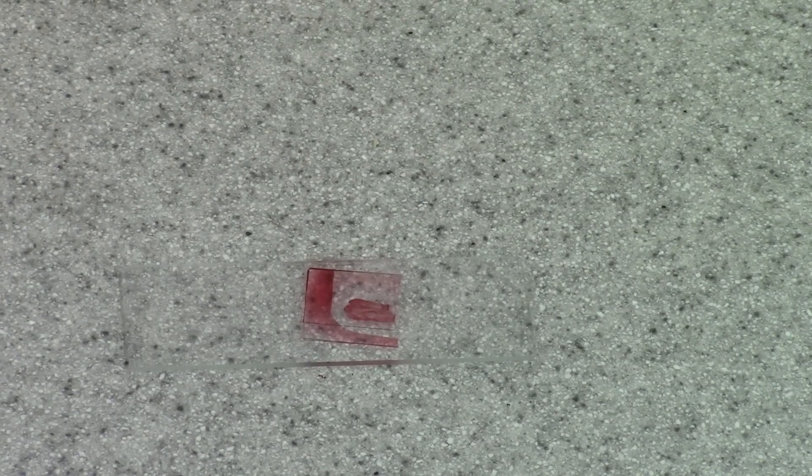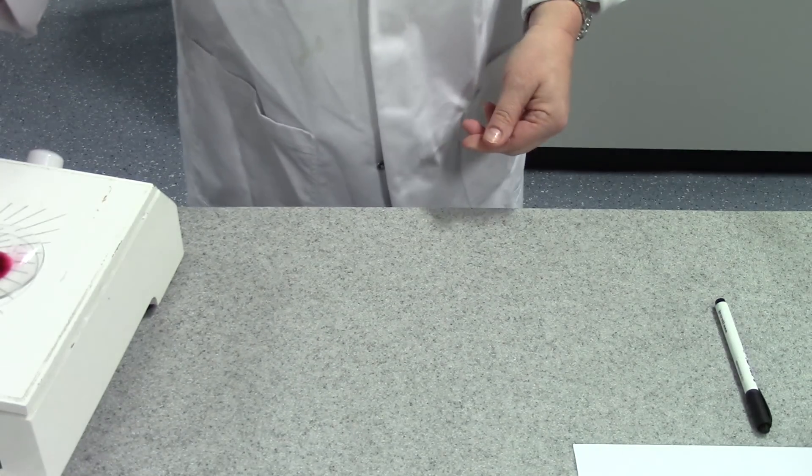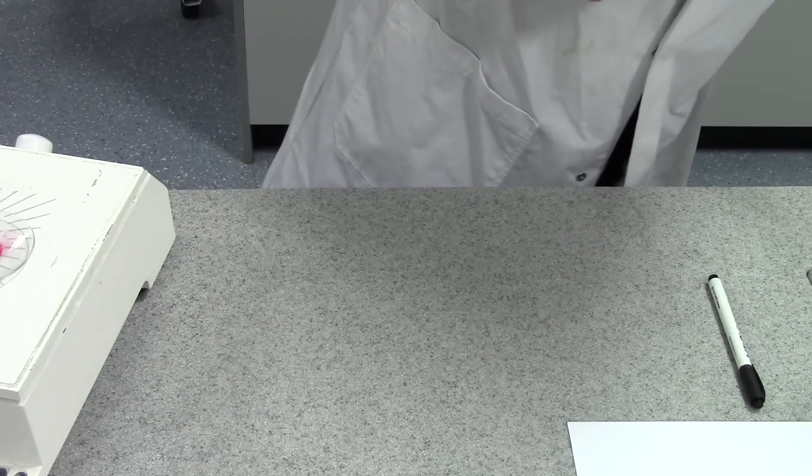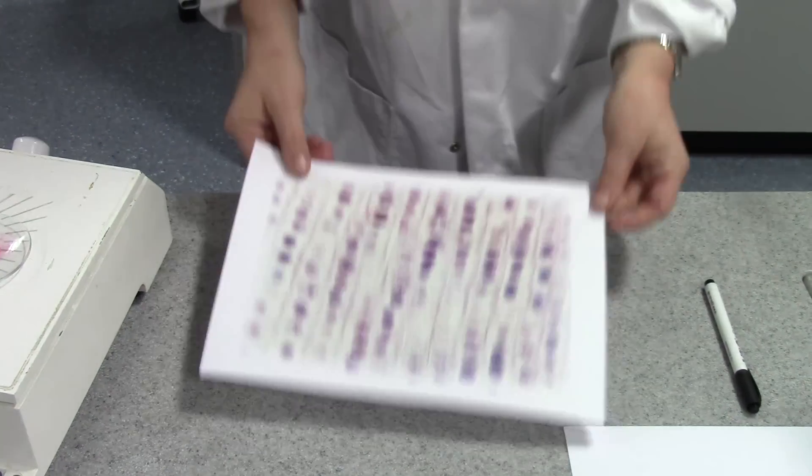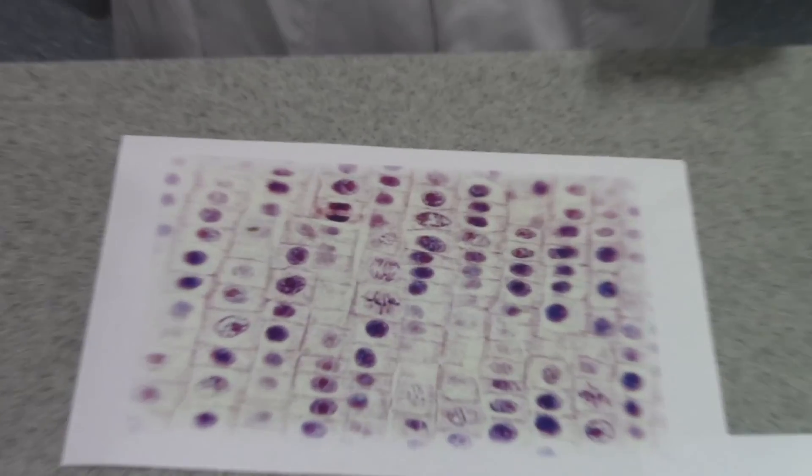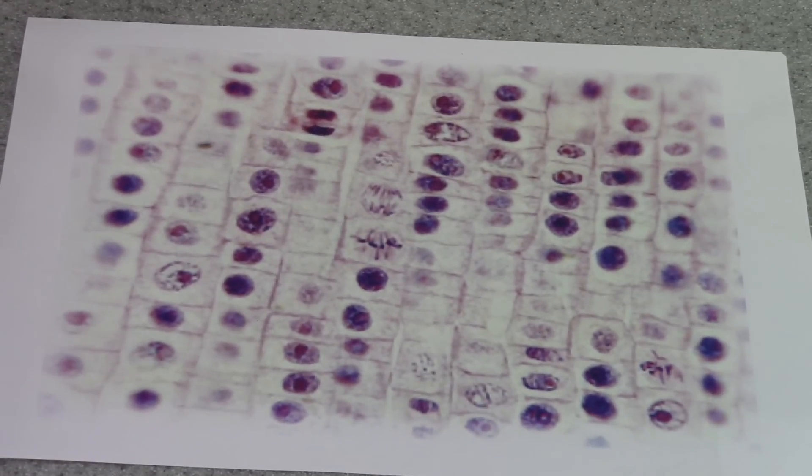We're now ready to observe the slide under a standard laboratory microscope. Now, what we should see, if our technique has been successful, and I do warn you that often it's not, it's very difficult sometimes to get this to work, are cells in all of the different stages of mitosis.